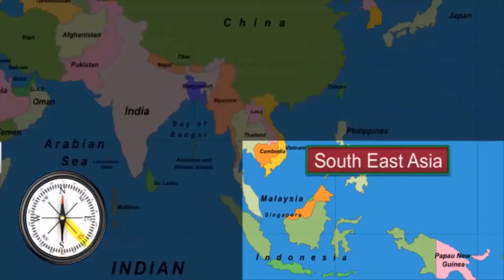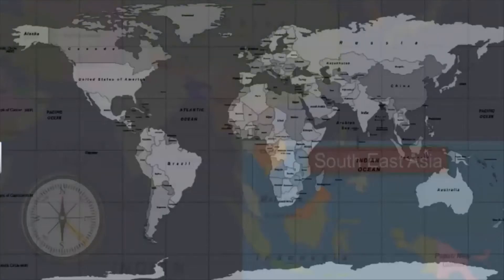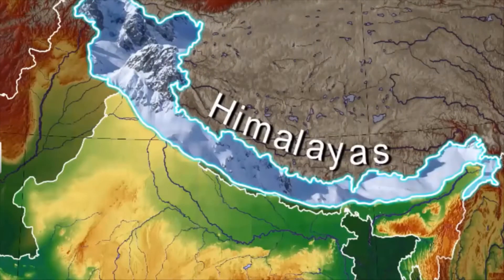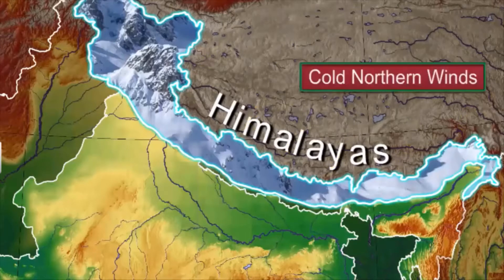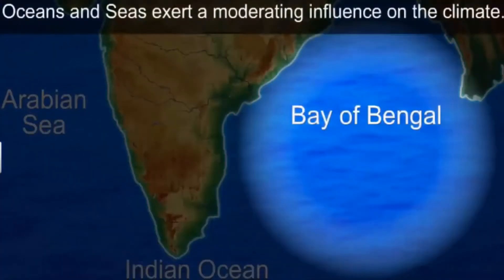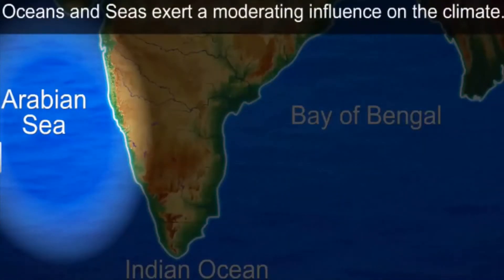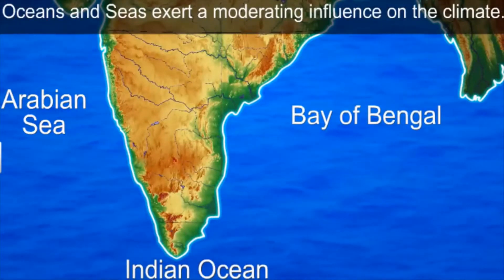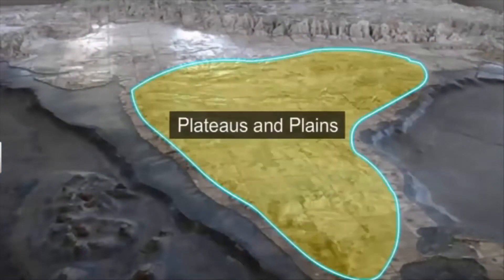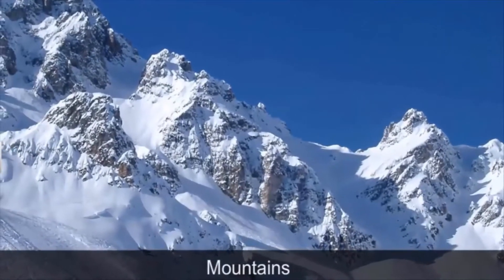India's unique physical setting imparts uniformity to its climate. India is flanked by towering mountains in the north which block the cold bitter winds blowing from the northern hemisphere. On the remaining three sides, it is surrounded by oceans and seas that exert a moderating influence over the subcontinent. However, due to its diverse topography, a wide range of climatic conditions that vary greatly from region to region and sometimes even from day to night can be experienced.